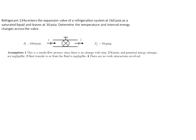Now this is a problem for refrigerant 134A — problem 664E. It's very similar, but there's a trick to it. Here it tells me that the pressure at the entrance is 160 PSI — so now we're dealing with English units, not SI units. It's telling me it's a saturated liquid and leaves at 30 PSI, so we need to find the temperature and internal energy across the valve. Since it's a valve, the same assumptions apply: adiabatic, no work, no change in elevation or potential energy.